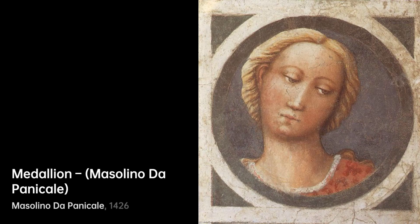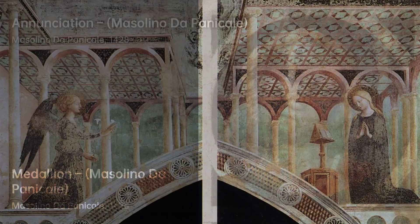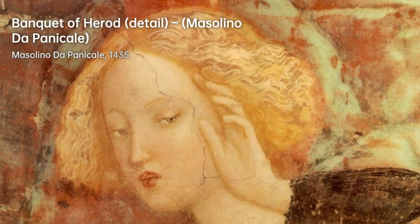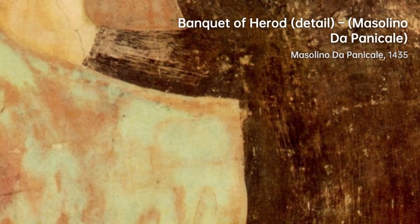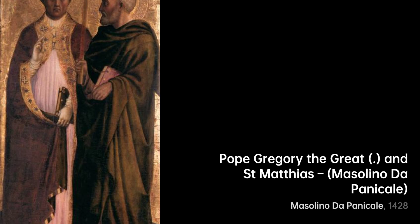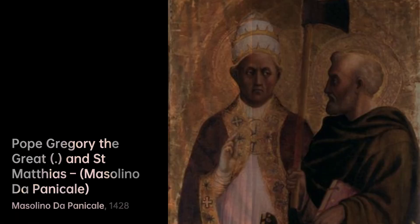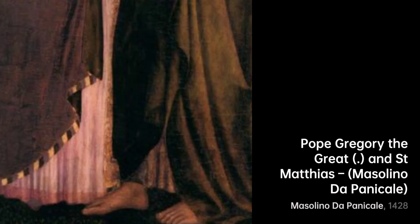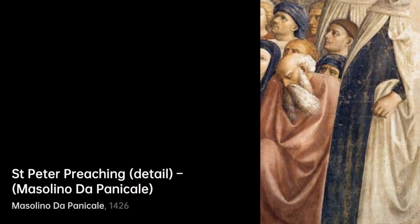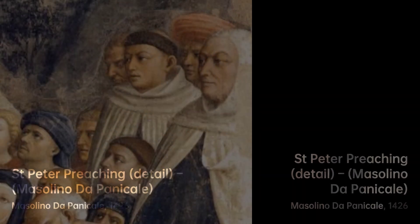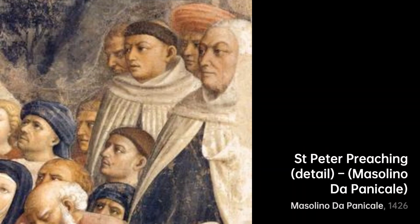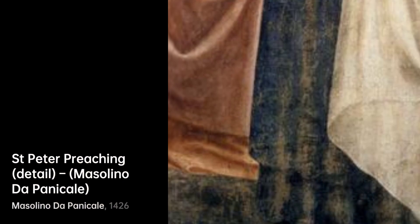Despite his achievements, Masolino faced challenges later in life. He spent his later years, after 1435, working for Cardinal Brando Castiglione in Castiglione Olona. While his career may not have ended on a high note, Masolino's legacy lived on through the artists he influenced, such as his son Marie de Panicale, who became a renowned painter in his own right.